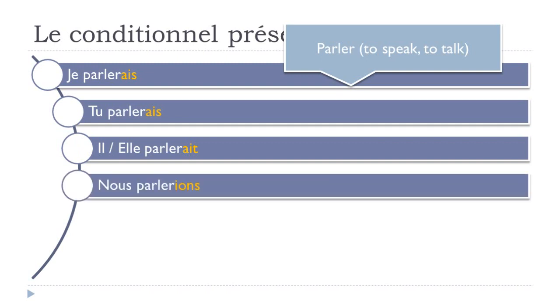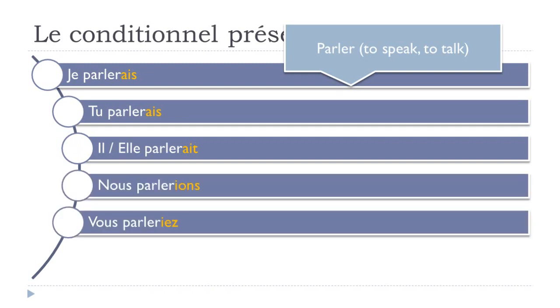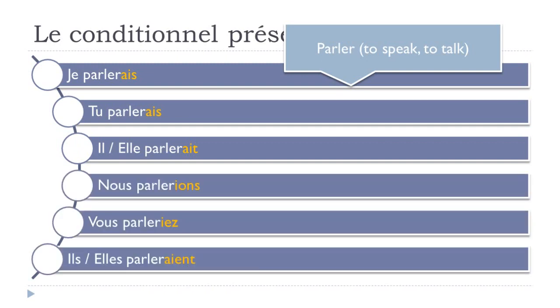Let's conjugate Parler — to speak or to talk — at the Conditionnel Présent: Je parlerais, Tu parlerais, Il parlerait, Elle parlerait, Nous parlerions, Vous parleriez, Ils parleraient, Elles parleraient.